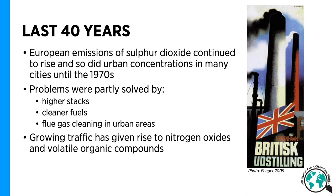Over the last 40 years, European emissions of sulfur dioxide continued to rise, as did urban concentrations in many cities until the 1970s. This was partly due to the location of industries within city centers. These problems were partly solved by higher stacks, the use of cleaner fuels in industrial activities, as well as the cleaning of flue gas in urban areas. As industries relocated outside of the city centers, the increasing traffic gave rise to nitrogen oxides and volatile organic compounds that affect urban air quality.